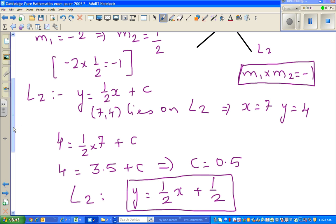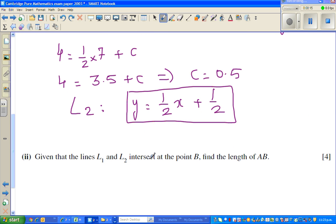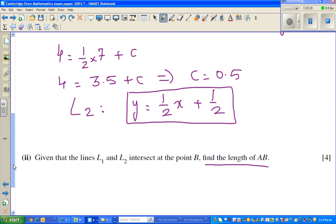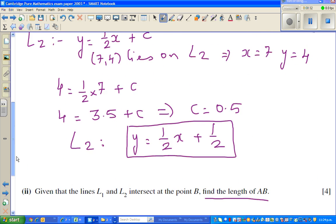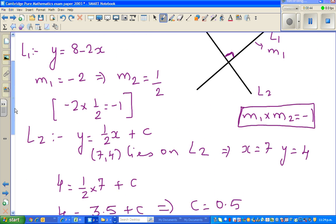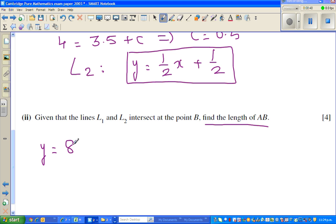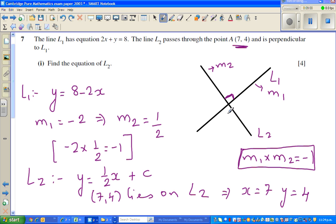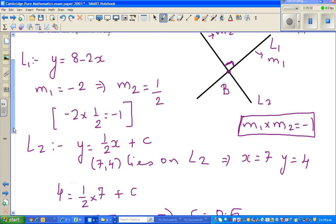Given that L2 and L1 intersect each other, find the length of AB. We need to find the point of intersection. A and B is the point of intersection. We know L1 is 8 minus 2x, and the other equation is half x plus half. We have to solve this simultaneous equation.